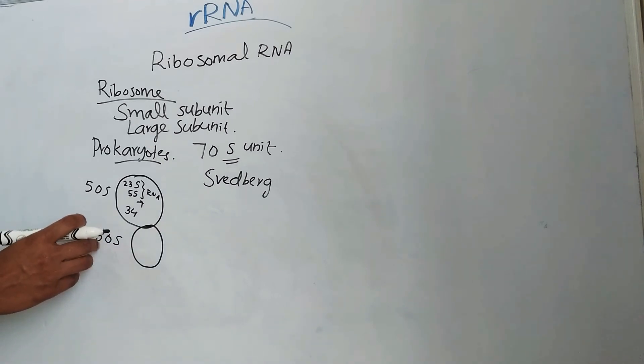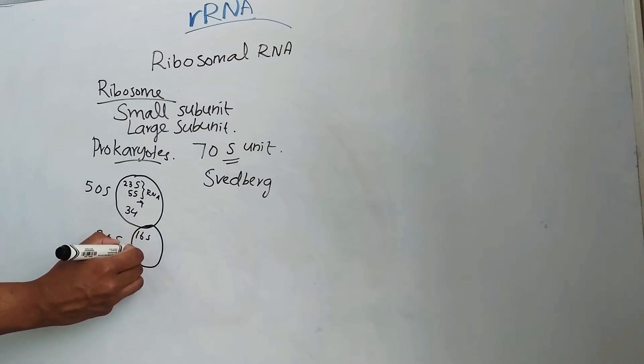Then this smaller subunit, that is 30S, is made up of 16S RNA and 21 proteins.